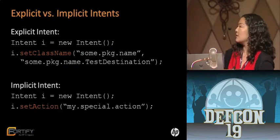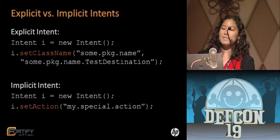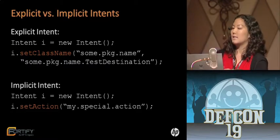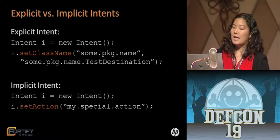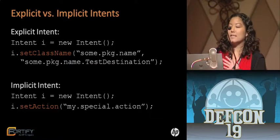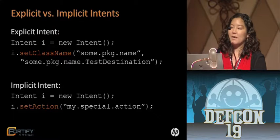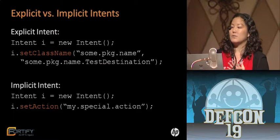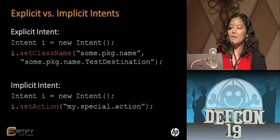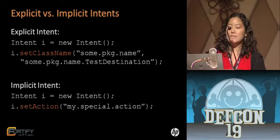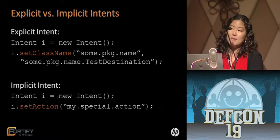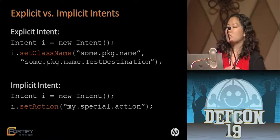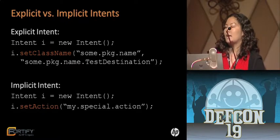To give you code examples: in the explicit intent example, you can see the class name is being set — that's the destination. This should be used when the developer has a specific recipient in mind. In the implicit intent example, the class name is not set; instead an action is set. This should be used when the developer just needs some component to handle a specific task.